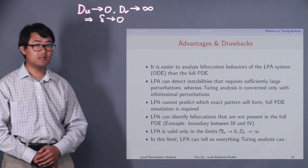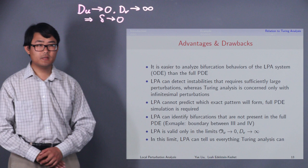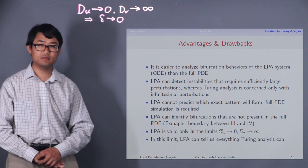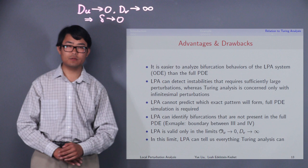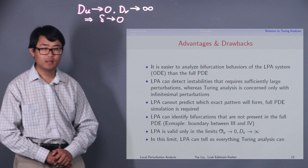LPA cannot predict which exact pattern would form. We need to simulate the full PDE in order to find out. LPA can identify bifurcations that are not really present in the full PDE. In our example, that is the distinction between regimes 3 and 4. They look very different on the LPA diagram, but for the full PDE, they produce the same type of solutions.